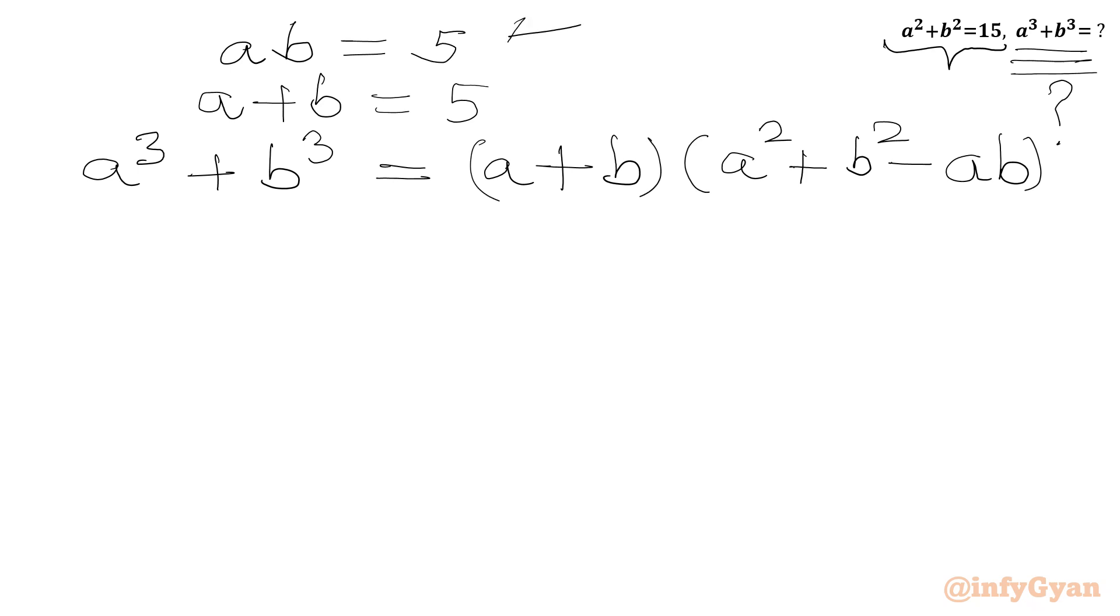Now ab is 5, a plus b is 5. Let us plug in all the values. So a plus b is 5 times a² plus b² is 15 minus ab is 5.